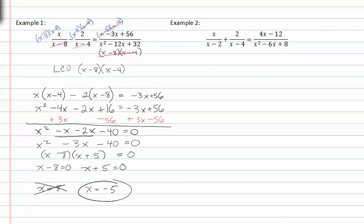Let's try this in example two. Our LCD is going to be most likely x minus two, x minus four. But let's go ahead and factor the trinomial just to make sure. X minus two, x minus four will indeed give me this trinomial. So my LCD is x minus two, x minus four.